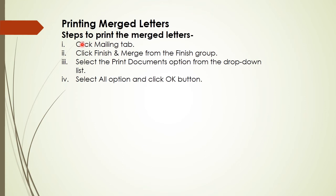For printing the merged letters, follow these simple steps: first, click the Mailings tab; then click Finish and Merge from the Finish group; select the Print Document option; select all options and click the OK button. The documents will then be printed.